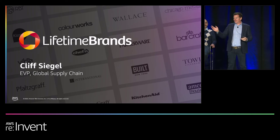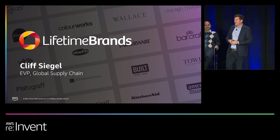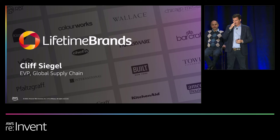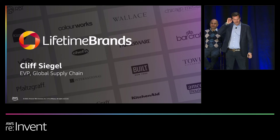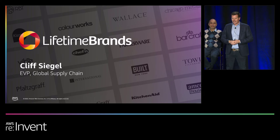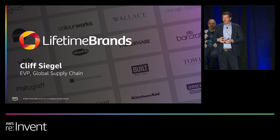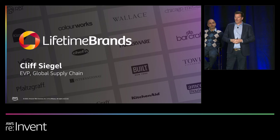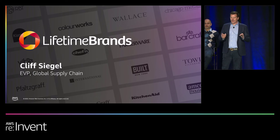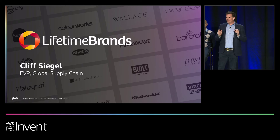Thank you. My name is Cliff Siegel. I'm the Executive Vice President of Global Supply Chain for Lifetime Brands. For those who don't know Lifetime Brands, we're a leading provider of kitchenware, tableware, and other products used primarily in the home — consumer goods sold under many brand names including Farberware, KitchenAid, Macasa, Sabatier, and Swell. We have a global focus, and our multi-channel access to customers motivates us to continually look for ways to increase our forecast accuracy so that we can better position our supply in anticipation of orders coming in from our customers.